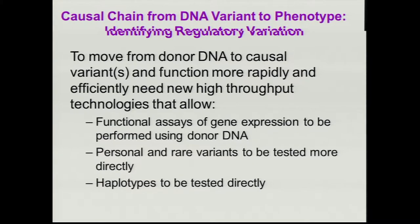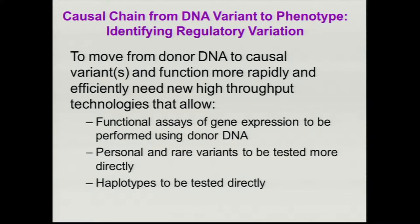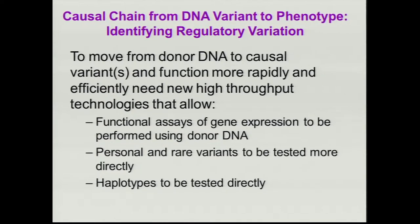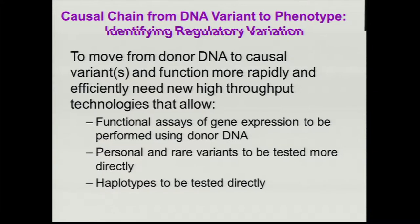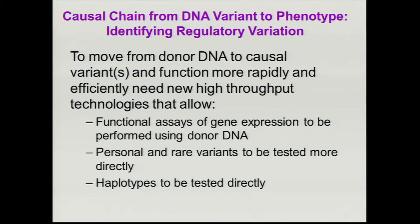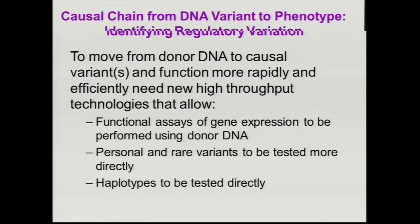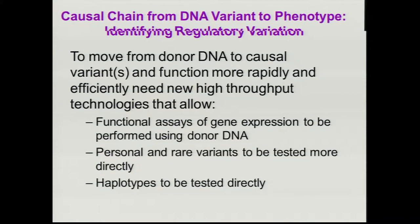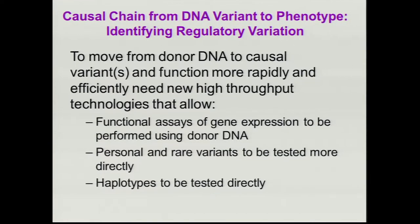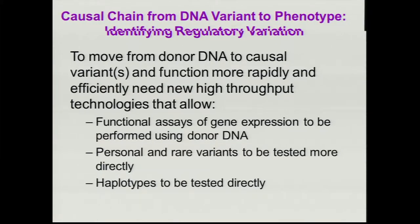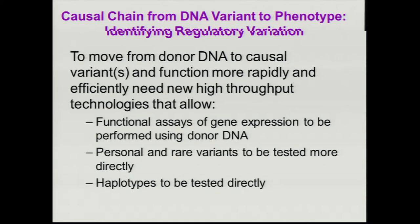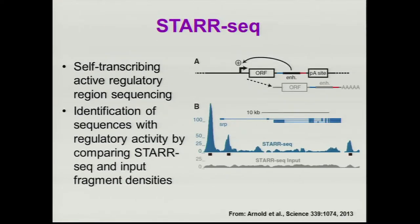This is a relatively tedious and laborious approach to marching your way through these regions. As you start to sequence these regions in greater numbers of people, you're going to find an increasing number of variants. The question was: was there a faster way to move from causal variants to function in a high-throughput manner? Could you use donor DNA for functional assays of gene expression, directly testing personal rare variants identified through sequencing as well as haplotypes?